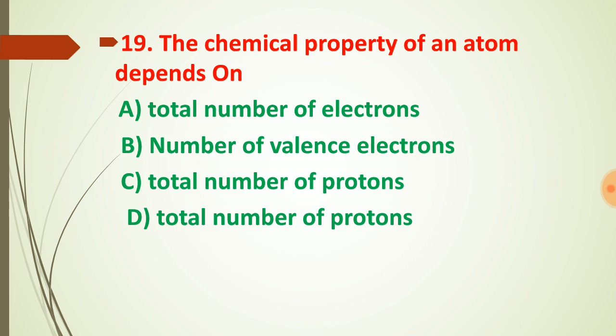Question number nineteen: the chemical property of an atom depends on which of the following? The options are total number of electrons, number of valence electrons, total number of protons, and total number of neutrons. The correct answer is option B — the chemical property of an element or atom depends on the number of valence electrons.